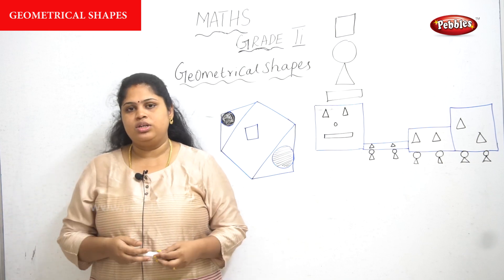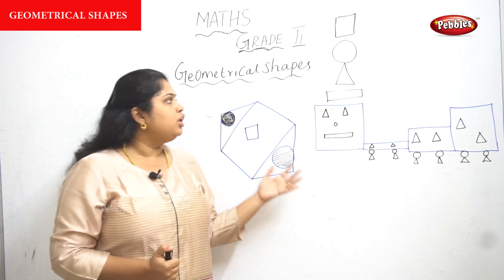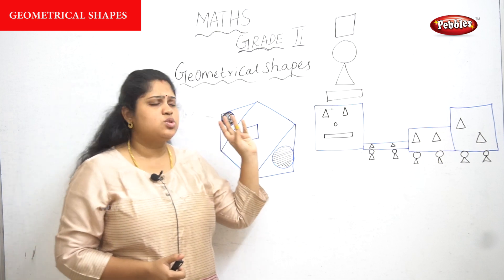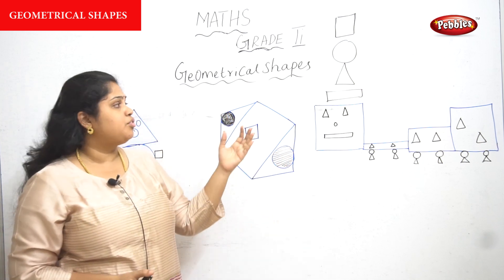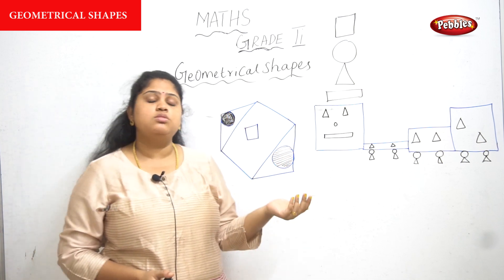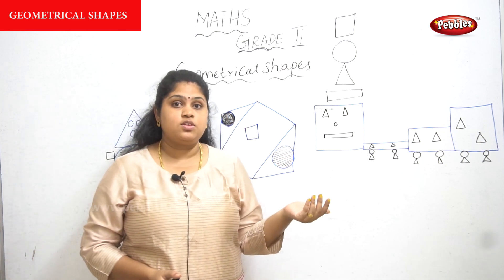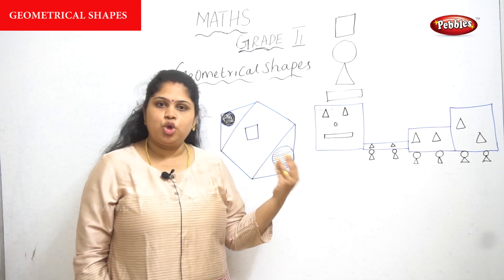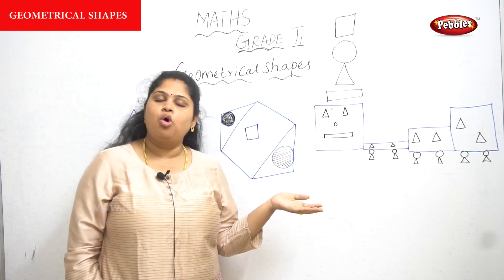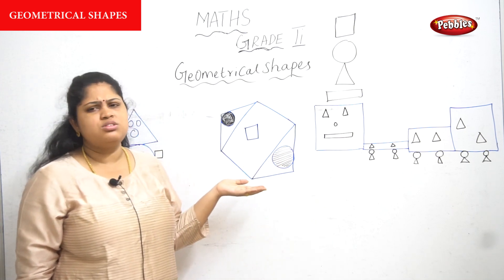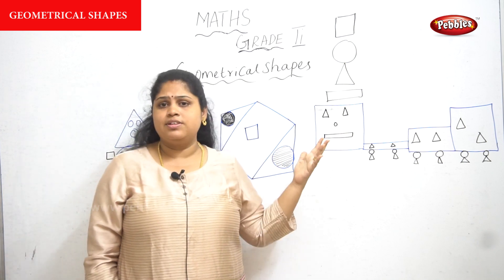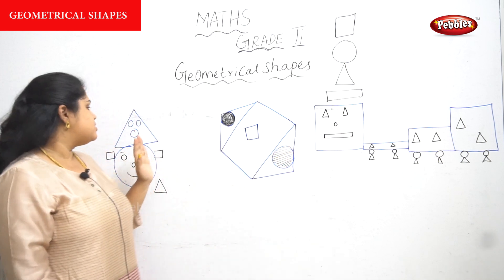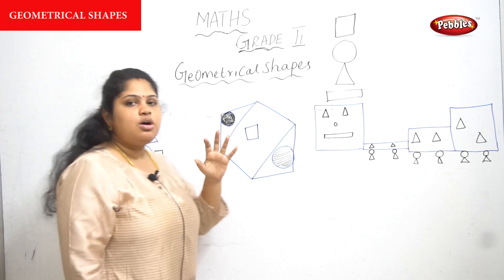For your knowledge, the Earth is in the shape of a sphere — we all know that. So the basic shapes are square, rectangle, circle, and triangle. The next level shape is like a cube. We will see that later.